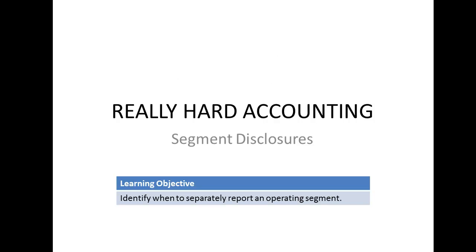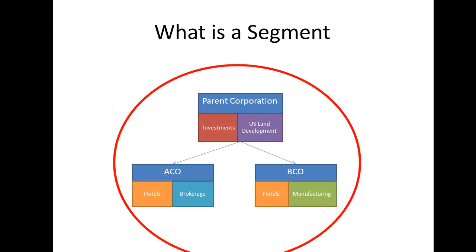This lesson will hardly hurt at all after what we've been through. It can get confusing sometimes as to what constitutes an operating segment. Legal entities are often not helpful in this regard, as one legal entity can hold multiple businesses, as depicted here. And different legal entities can undertake like activities, such as the hotels division in both A Co and B Co. Operating segments are based on the way that the parent corporation manages the component businesses, for assessing performance and making strategic decisions.